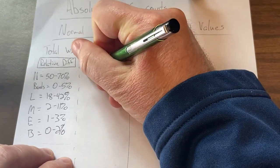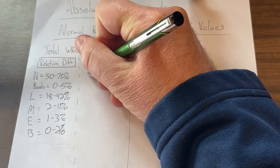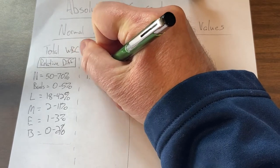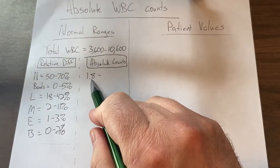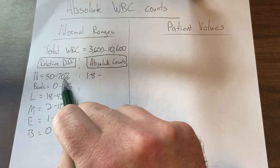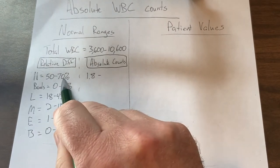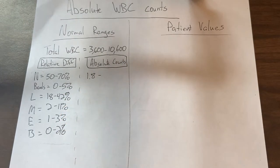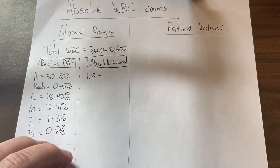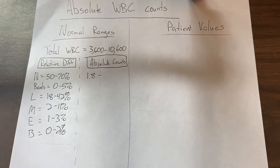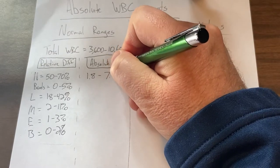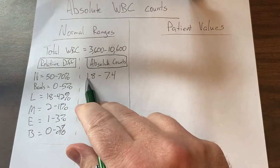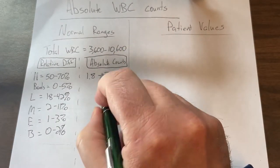That ends up being 1.8 times 10 to the third — I'll omit the times 10 to the third notation to save space. So 1.8 is the low end normal for the absolute neutrophil count. The high end would be 70 percent times 10,600, which is 0.7 times 10,600, and that value is 7.4. So the normal absolute neutrophil count is 1.8 to 7.4 — a pretty large range.